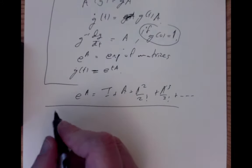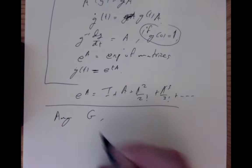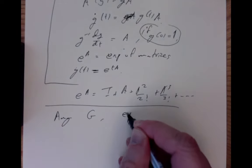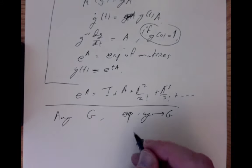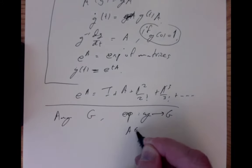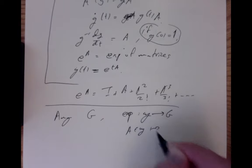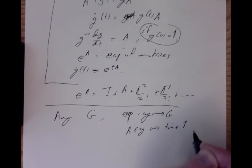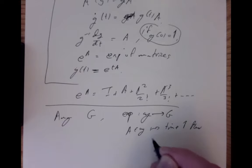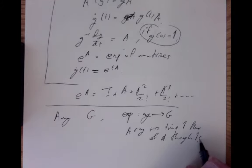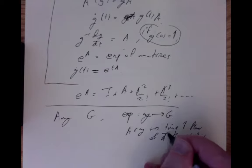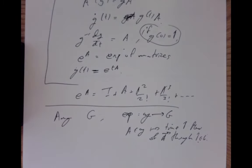On any Lie group G, we have this exponential map which takes the Lie algebra to the Lie group, defined by taking any A in the Lie algebra to the time-1 flow of A through the point 1 in the group. You start at point 1, flow along the left-invariant vector field, and flow for time 1.